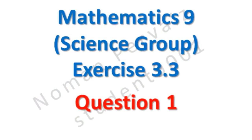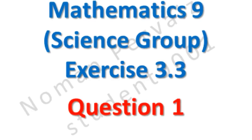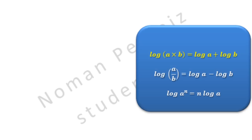We are going to start question number 1 of 9th class math, science group, exercise 3.3. Before starting our questions, we are going to tell you some properties that will be discussed during the solution. First property: log(A × B) = log A + log B — the multiplication sign is converted to a plus sign. Second property: log(A / B) = log A − log B — the division is converted to a minus sign. Third property: log(A^n) = n·log A — the power comes before log. We will show you when to use these properties, so stay with us.